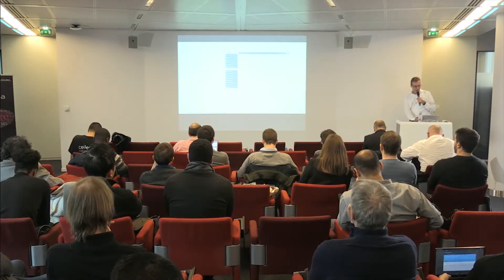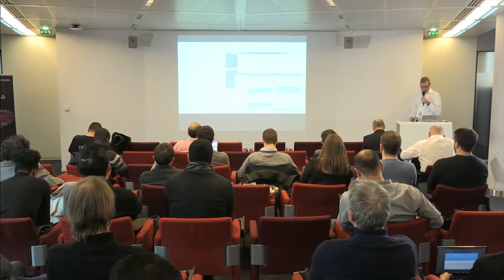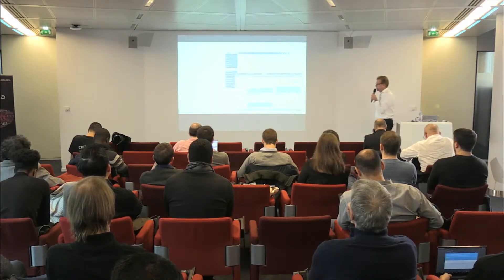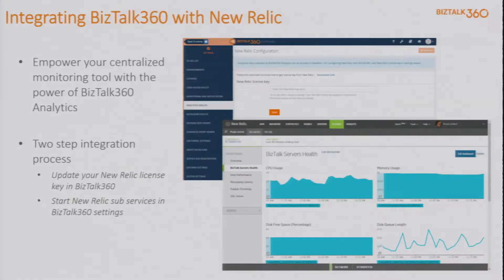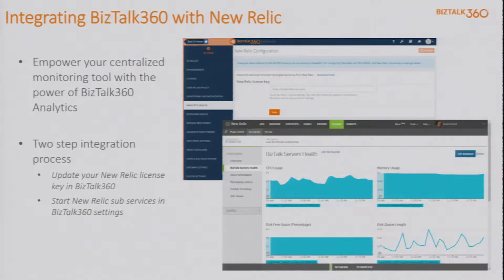Next, we have integration with New Relic. New Relic is a tool in which you can get a good view of the performance of your BizTalk group. From BizTalk 360, you can push your environment performance counters towards New Relic, so you have one console to view all your performance counters.